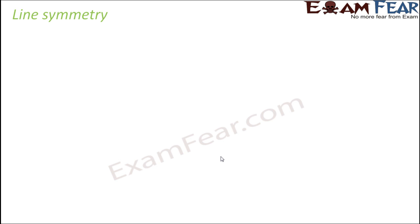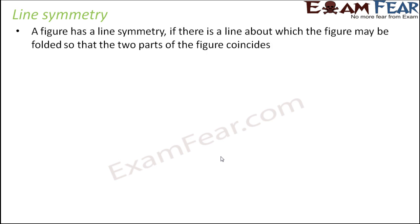The simplest type of symmetry is line symmetry. A figure has line symmetry if there exists a line about which the figure may be folded so that the two parts of the figure coincide.